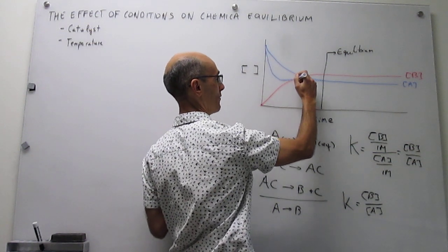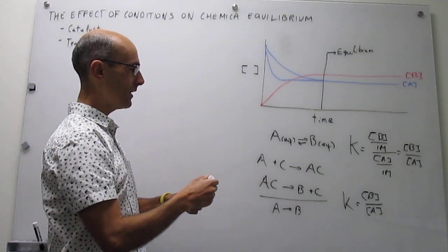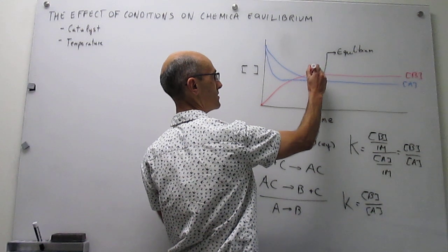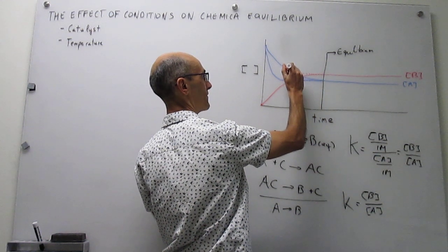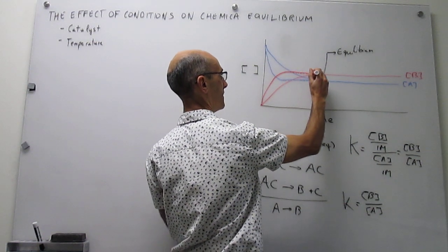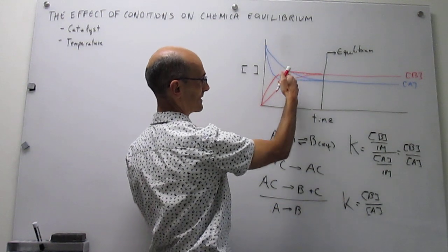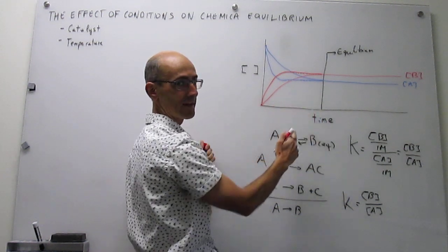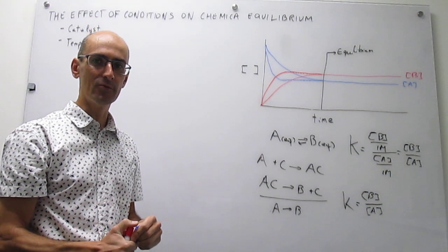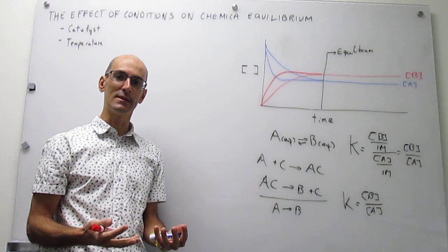With a catalyst, you reach equilibrium way earlier than you did before. The position of equilibrium doesn't change — you just reach it faster. So that is the effect of the catalyst.